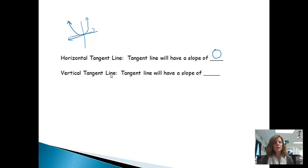If a function has a vertical tangent line, if you think of a vertical line, a vertical tangent line would be going in this direction, and that line would have a slope of undefined. So when we're doing these problems, we'll basically be looking for where is there a slope of zero and where is there a slope that is undefined.